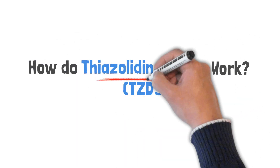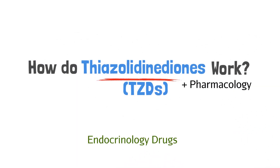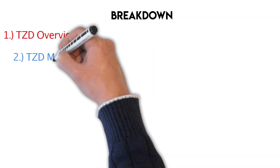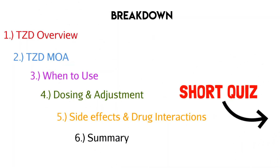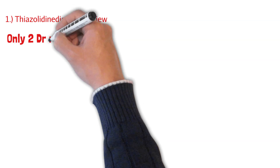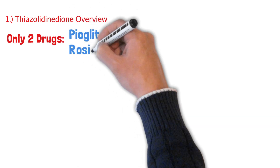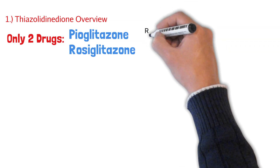Let's talk about thiazolidinediones and how they work, plus some pharmacology. Here's everything we'll talk about, timestamps down below, and a short quiz at the end. To first understand thiazolidinediones, we need to do a quick overview. In this class of drugs, we only have two medications: pioglitazone and rosiglitazone. We'll dive into the details of each later.